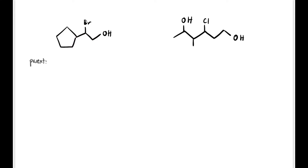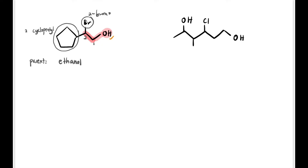If the OH group is not directly attached to the cyclic ring, we treat OH as the functional group determining the parent chain. The OH carbon has only two carbons attached to it, so the parent is ethanol. The substituents are: bromo at carbon 2, and cyclopentyl at carbon 2 also. Written alphabetically: 2-bromo-2-cyclopentylethanol. Only one carbon is attached to the OH carbon, so the class is primary alcohol.